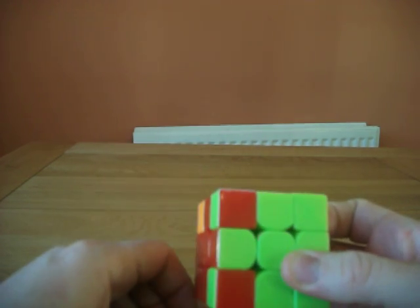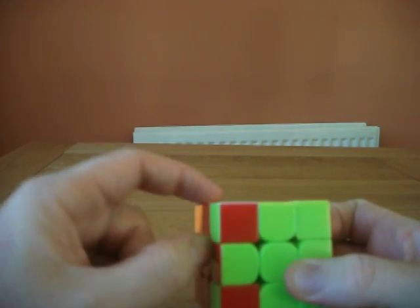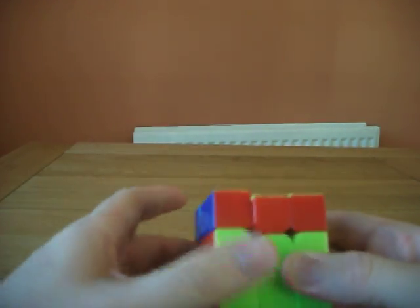So after three iterations, all the edges are in the right places. The corners, these two corners have swapped. One, two, three, and we're back.